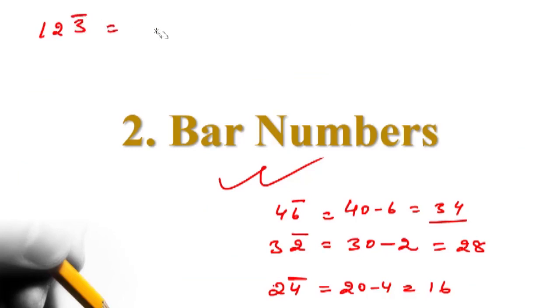So what are we going to write down? 1, 2, 0 minus 3. That is 1, 1, 7. Got it?